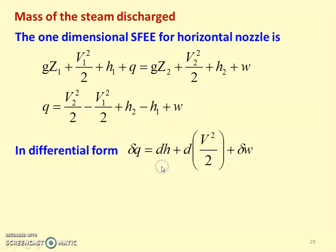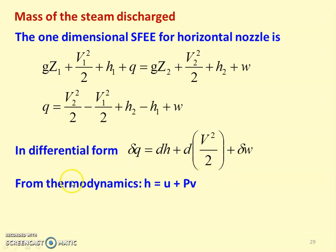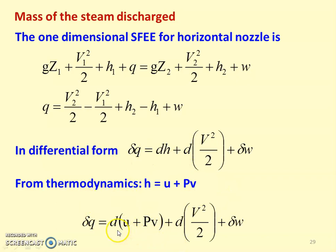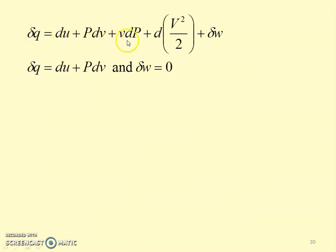We write the equation in differential form: dQ equals dH plus d(V squared by 2) plus dW. From thermodynamics, we know H equals U plus PV. Substituting for H, the equation becomes dQ equals d(U plus PV) plus d(V squared by 2) plus dW. Performing the differentiation on the right-hand side, we get dQ equals dU plus PdV plus VdP plus d(V squared by 2) plus dW. From the first law of thermodynamics, dQ equals dU plus PdV, and dW equals 0 for a nozzle.